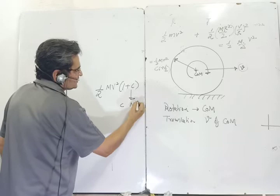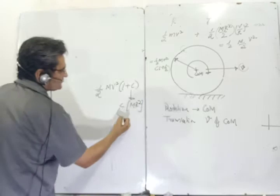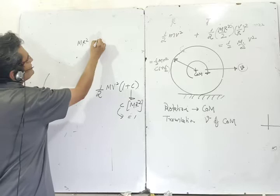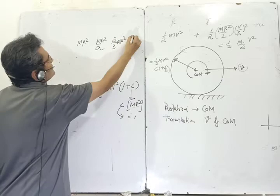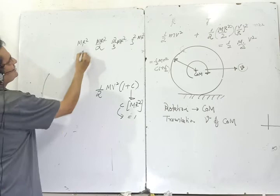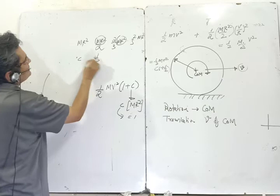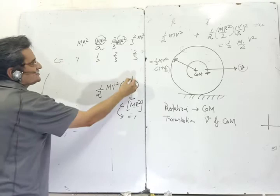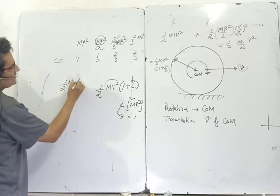C is the coefficient with mr² in the moment of inertia. For a ring, I = mr² so C = 1. For a disc, I = mr²/2 so C = ½. For a hollow sphere (shell), I = (2/3)mr² so C = 2/3. For a solid sphere, I = (2/5)mr² so C = 2/5. Just substitute C into KE = ½mv²(1 + C). When there is no rotation, C = 0, giving pure translational kinetic energy.